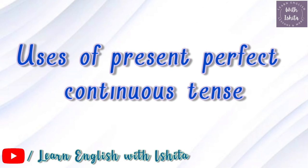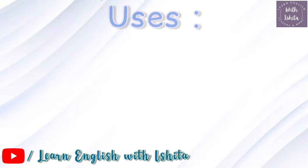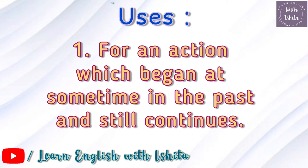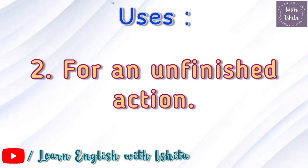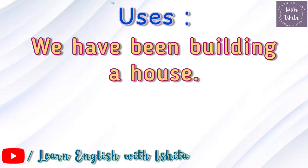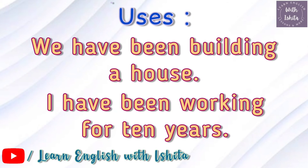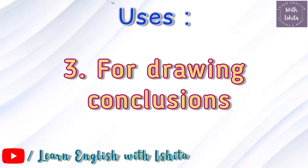Now let's learn about the uses of present perfect continuous tense. Number one: for an action which began at some time in the past and still continues — for example, 'They have been playing since four o'clock.' Number two: for an unfinished action — for example, 'We have been building a house' (the building is not complete), or 'I have been walking for ten years' (I'm still walking).